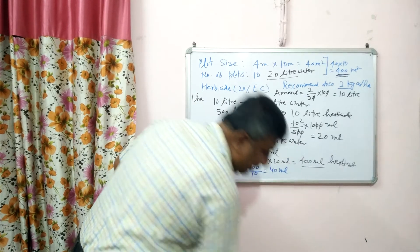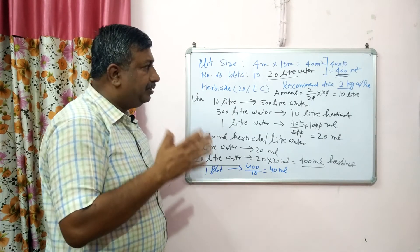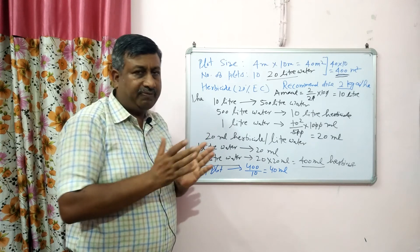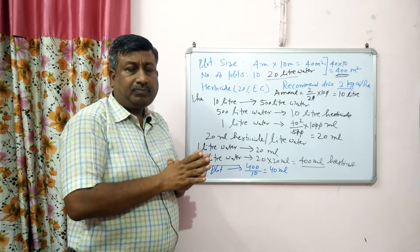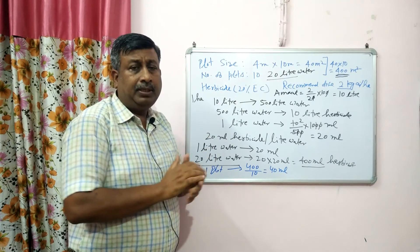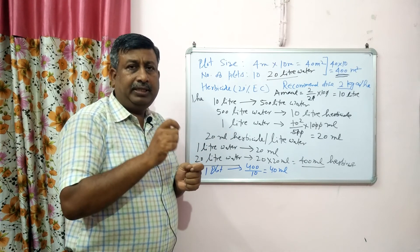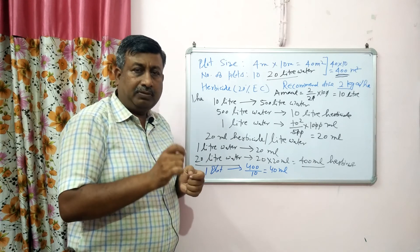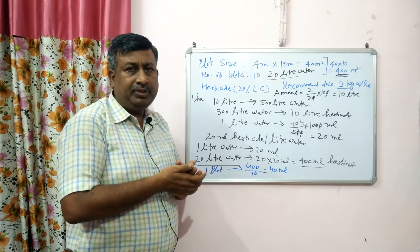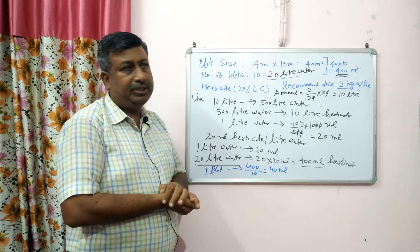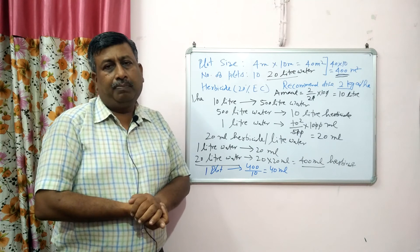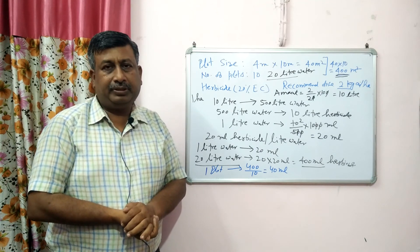Remember the simple calculation: first calculate the amount of herbicide per hectare; then considering 500 litre water, calculate the amount of herbicide in 1 litre water; then calculate the amount of water in litre for the area; then simply calculate how much herbicide is required. This is the way we can calculate the amount of herbicide for small plots. Thank you very much.